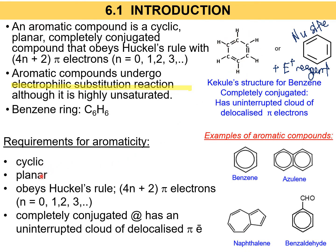Here are the requirements for aromaticity. As long as you see a hexagon shape like this — cyclic, planar, following Hückel's rule — and there are alternating double bonds, that means it is completely conjugated and has an uninterrupted cloud of delocalized pi electrons. That is what makes it an aromatic ring.